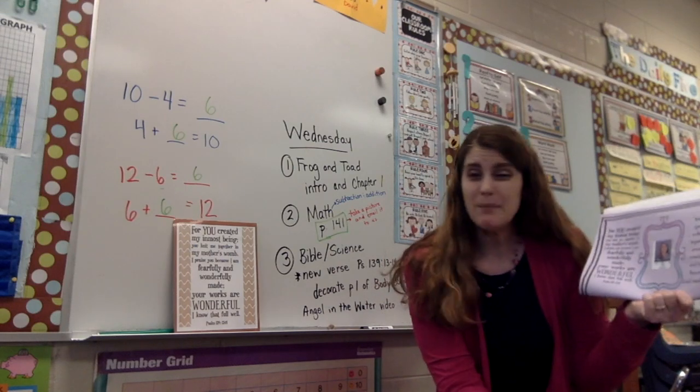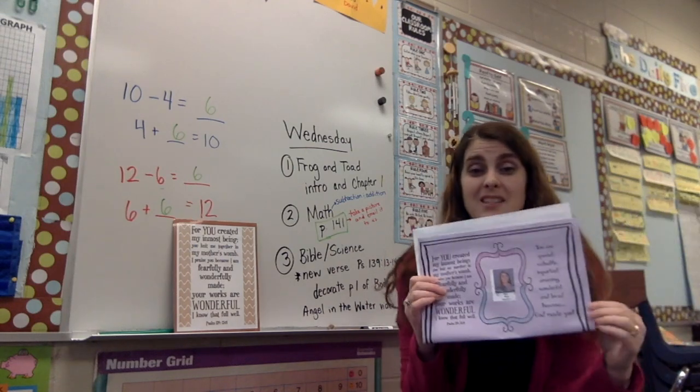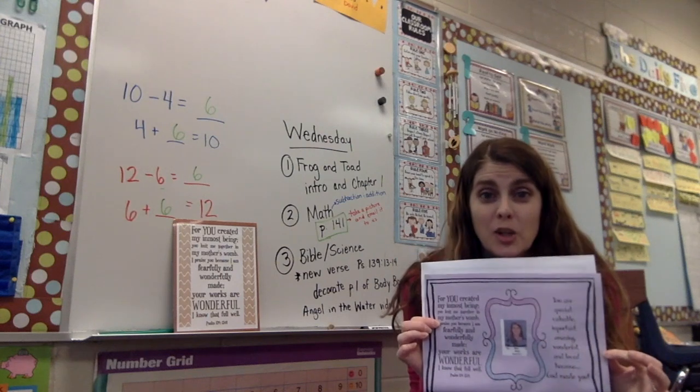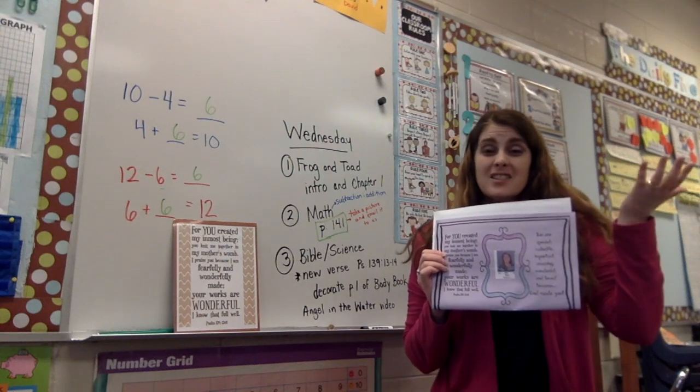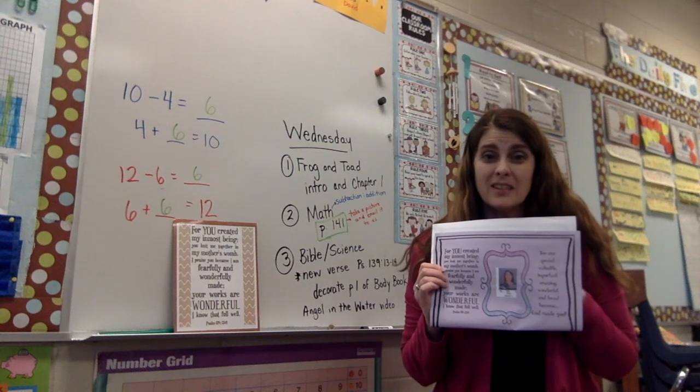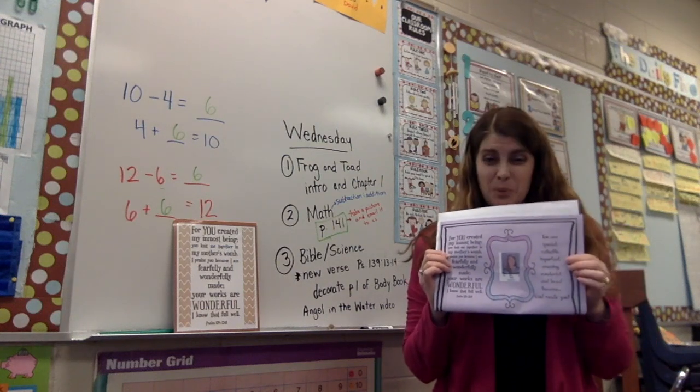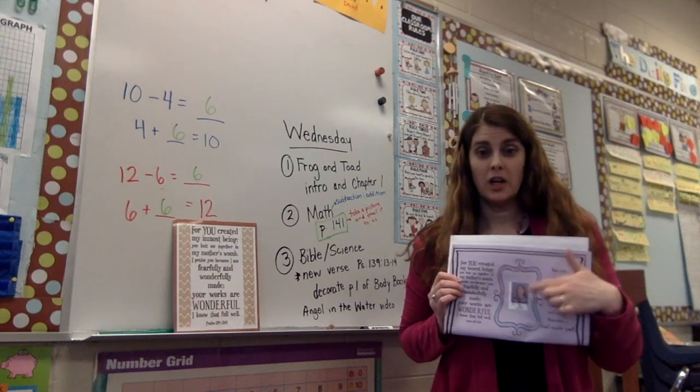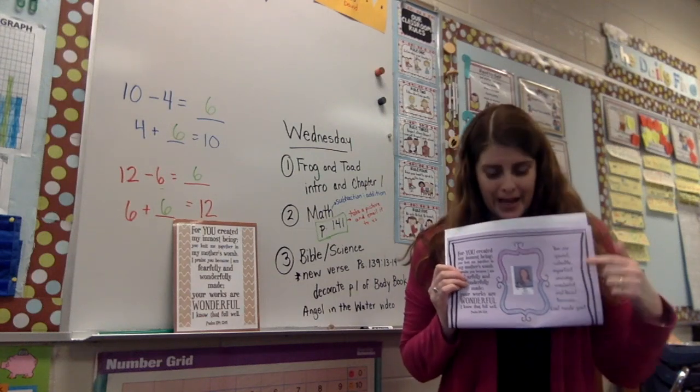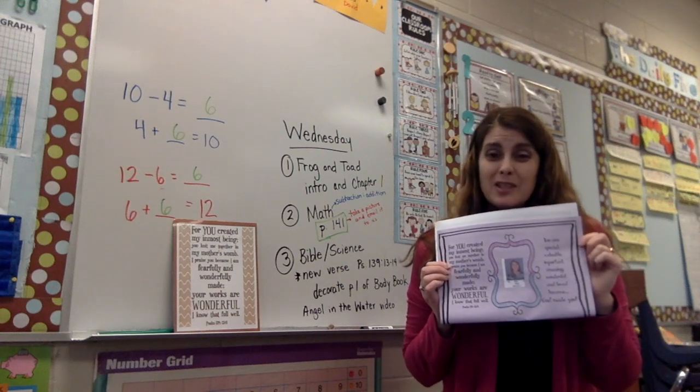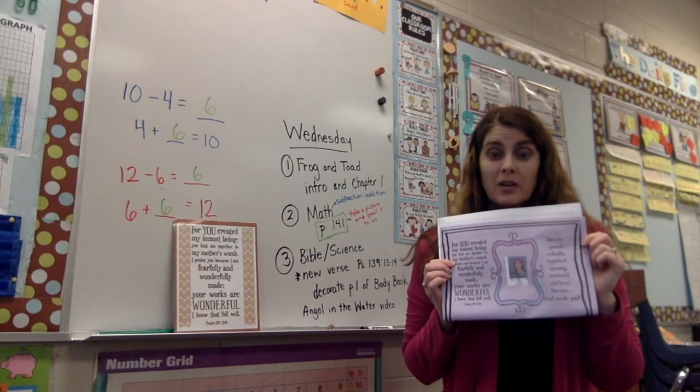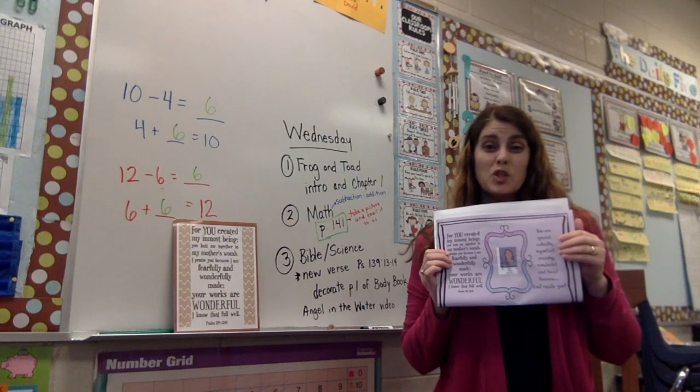And then it says you are special, valuable, important, amazing, wonderful and loved, not because of what you do but because God made you. We don't have to do anything to earn God's love. God just loves us because we're his child, because you're his child, and that's pretty amazing. Now we put a picture in there of you already and you get to decorate around your frame and then practice saying this verse a couple of times.